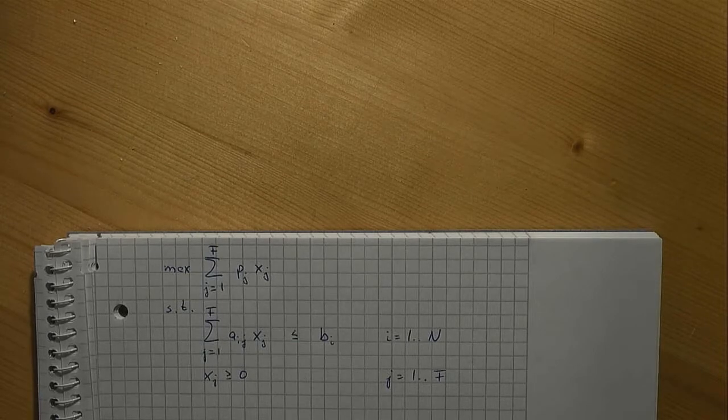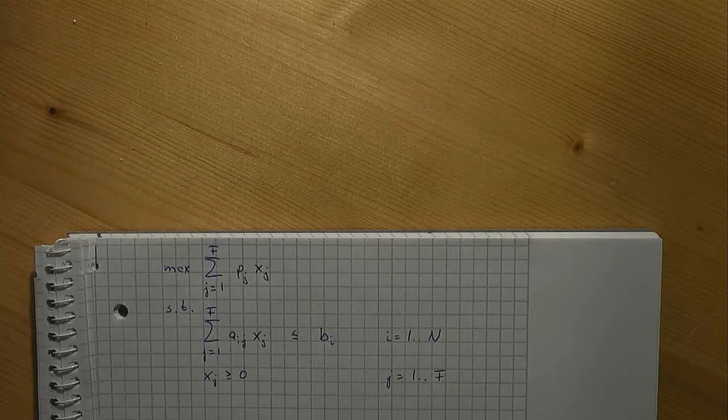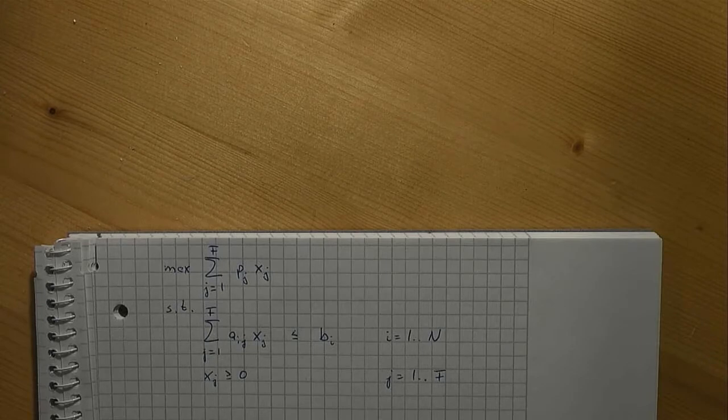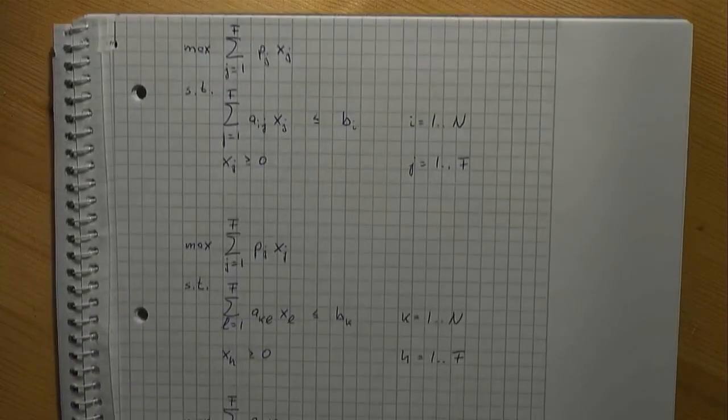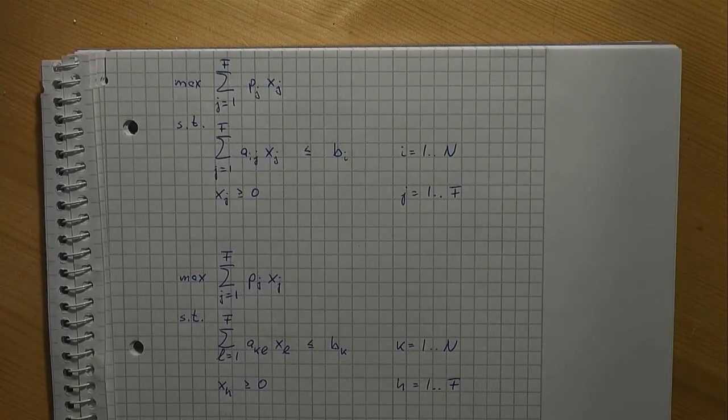It's a big surprise for the beginner that such obvious naming rules need not be true for indices. Have a look at this model formulation for instance. As you can see, in each row of the model I have used new names for the indices. In the objective function I have used j to denote the furniture types. In the first constraint I have used l for the furniture types and k for the part types. And in the domains I have used h for the furniture types.